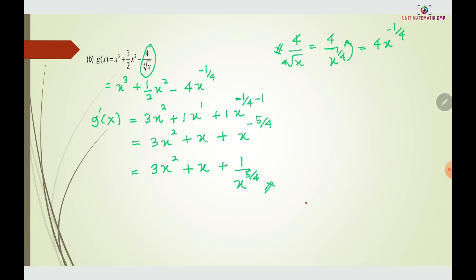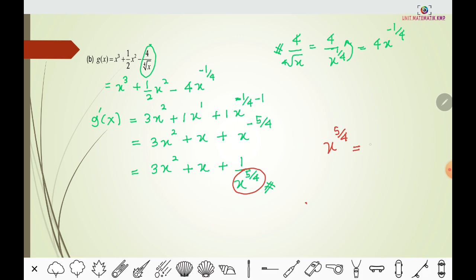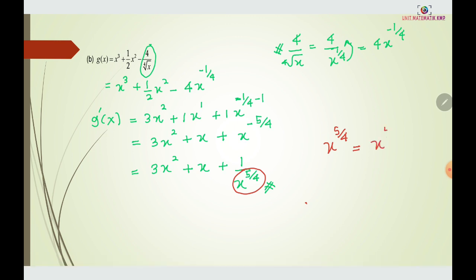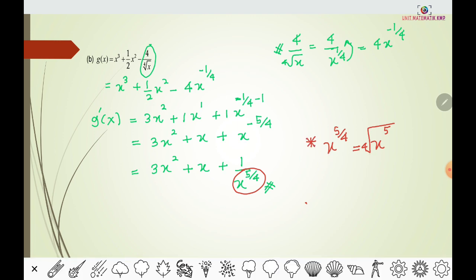So the final answer is g'(x) = 3x² + x + 1/x^(5/4). As an alternative notation, x^(5/4) can also be written as the fourth root of x^5. Both forms mean the same thing, so you can write x^(5/4) or ⁴√(x⁵).